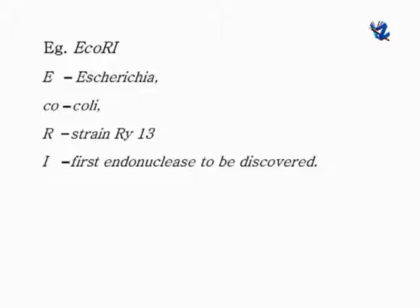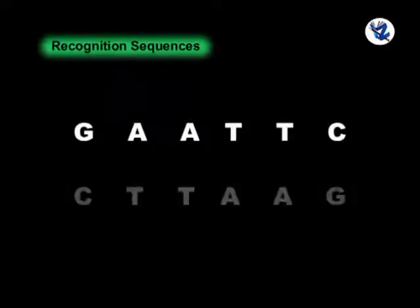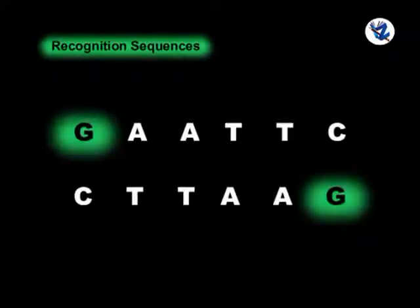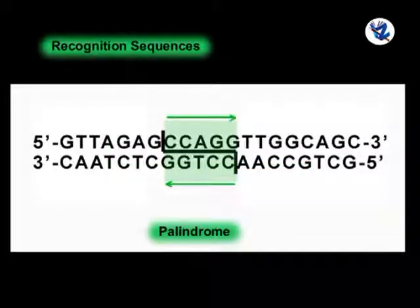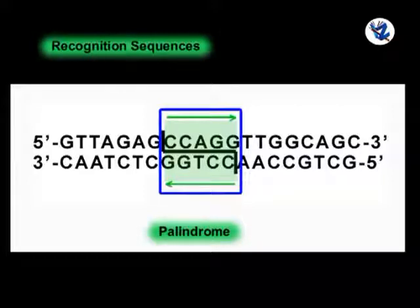For example, EcoRI is from Escherichia coli, strain RY13 — 'R' for the strain and 'I' for the first endonuclease discovered. Recognition sequences: a recognition sequence or restriction site is the site where DNA is cut by a restriction endonuclease. Restriction endonucleases specifically recognize DNA with a particular sequence of 4 to 8 nucleotides and cleave it. Most restriction sites are palindromes — in a palindrome, the base sequence of the second half of the DNA strand represents the mirror image of the first half.